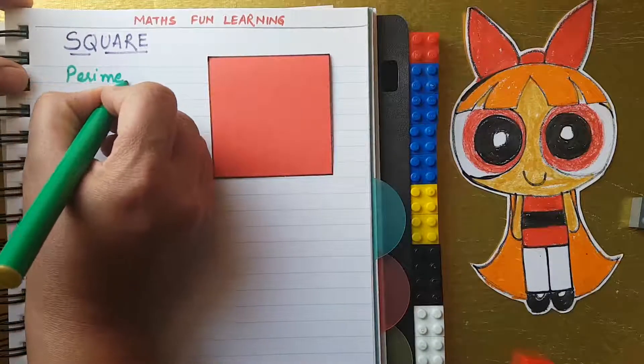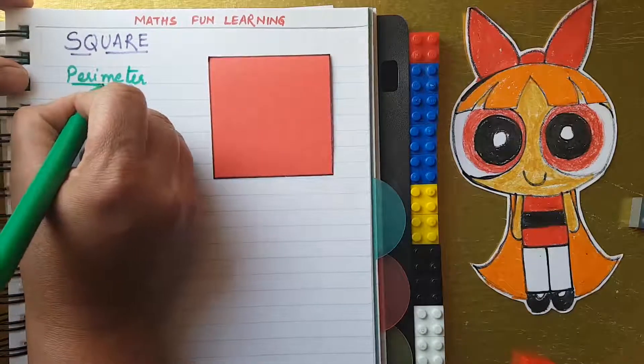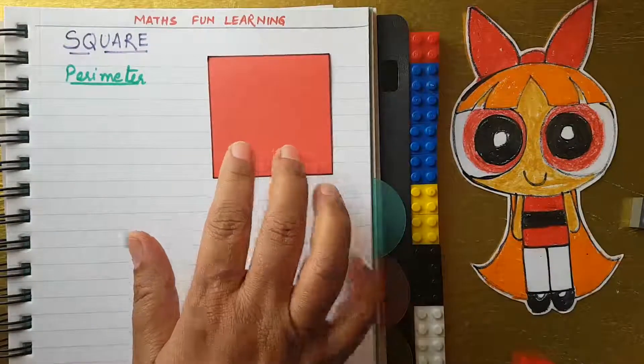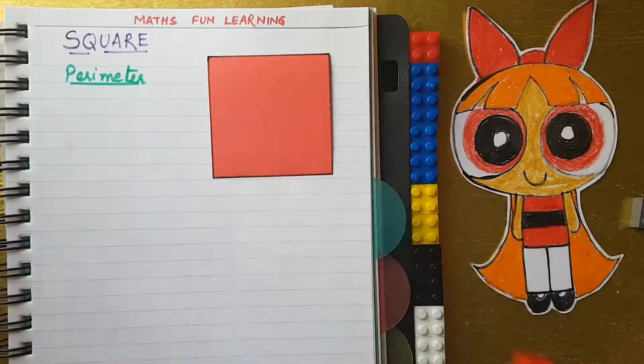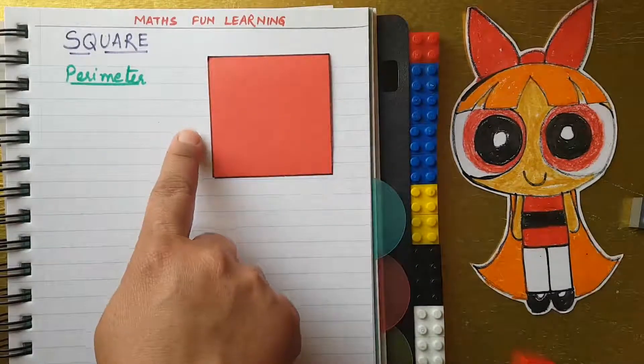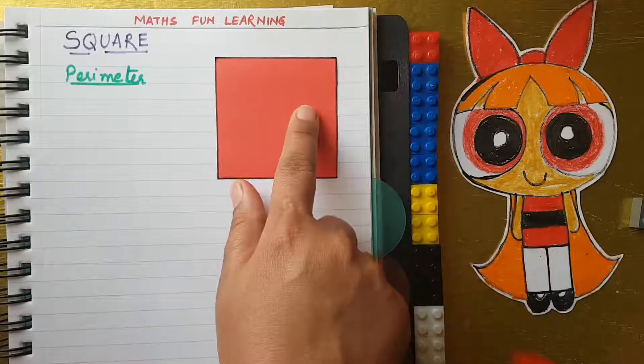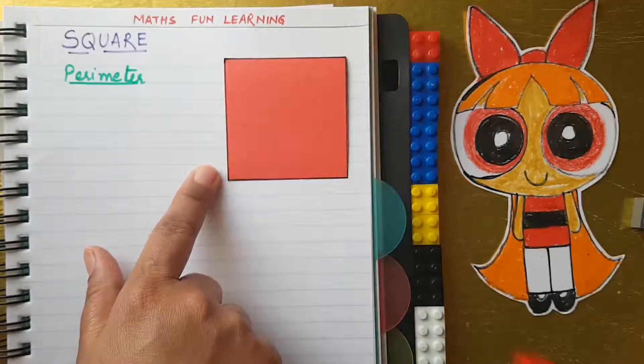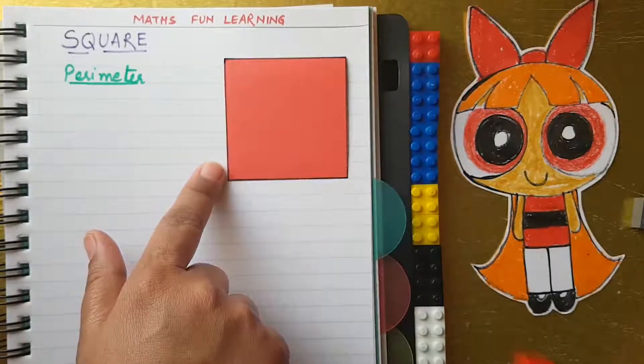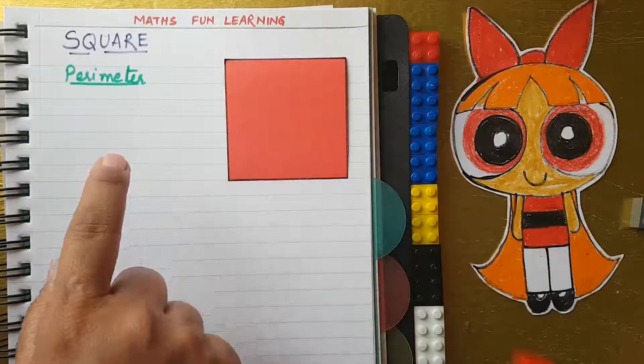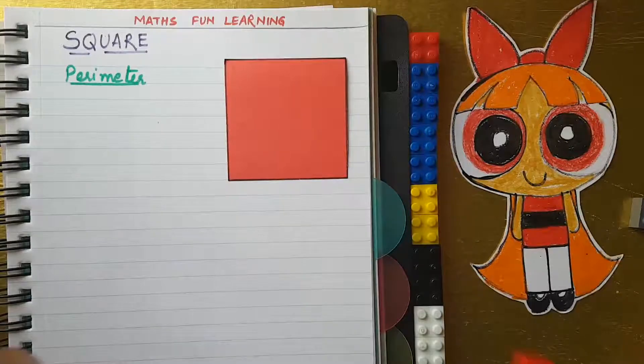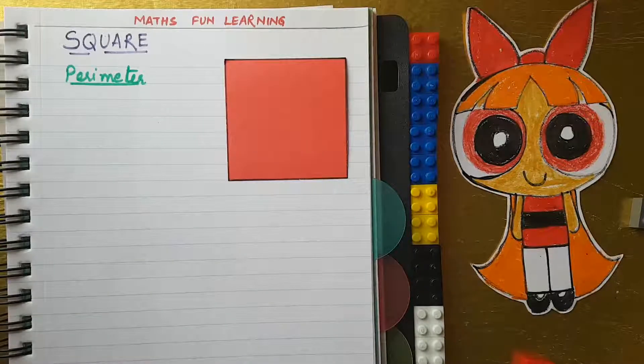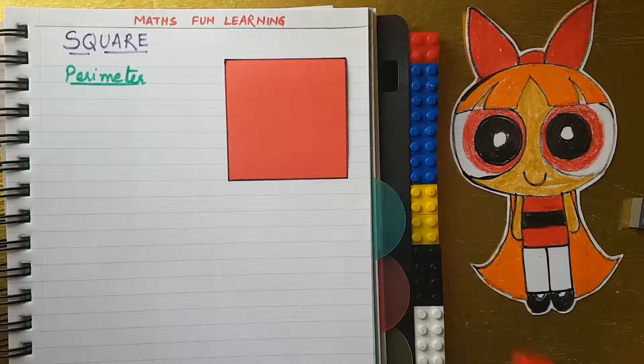The perimeter of a polygon shape means the sum of all the boundaries. We have to find out the length of the square and we will find the formula of the perimeter of this square.